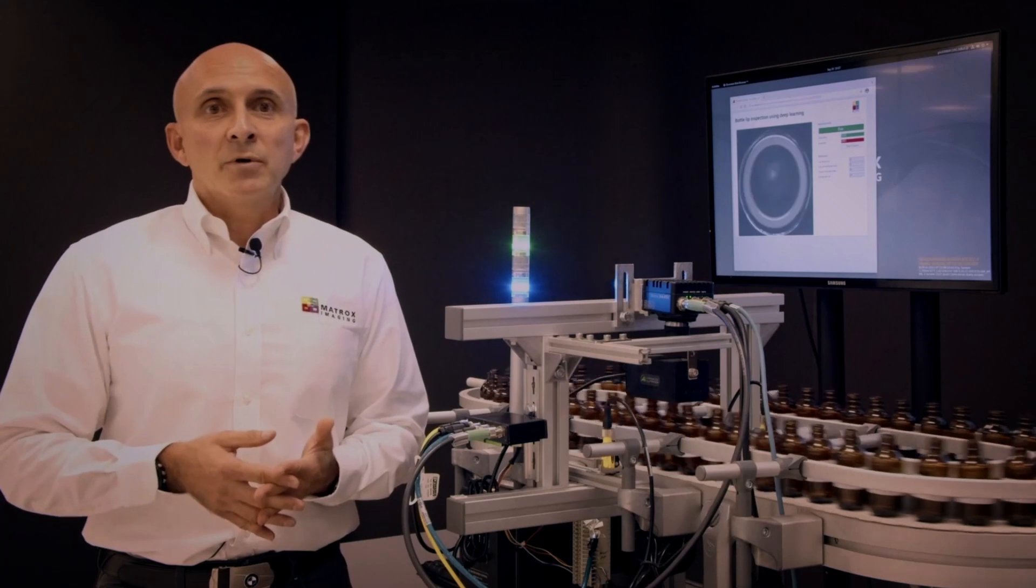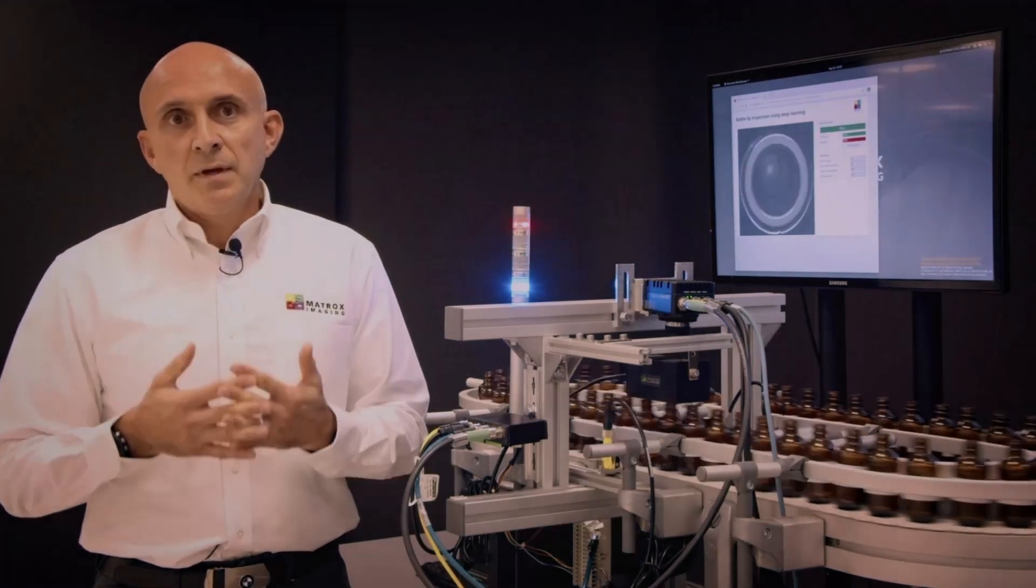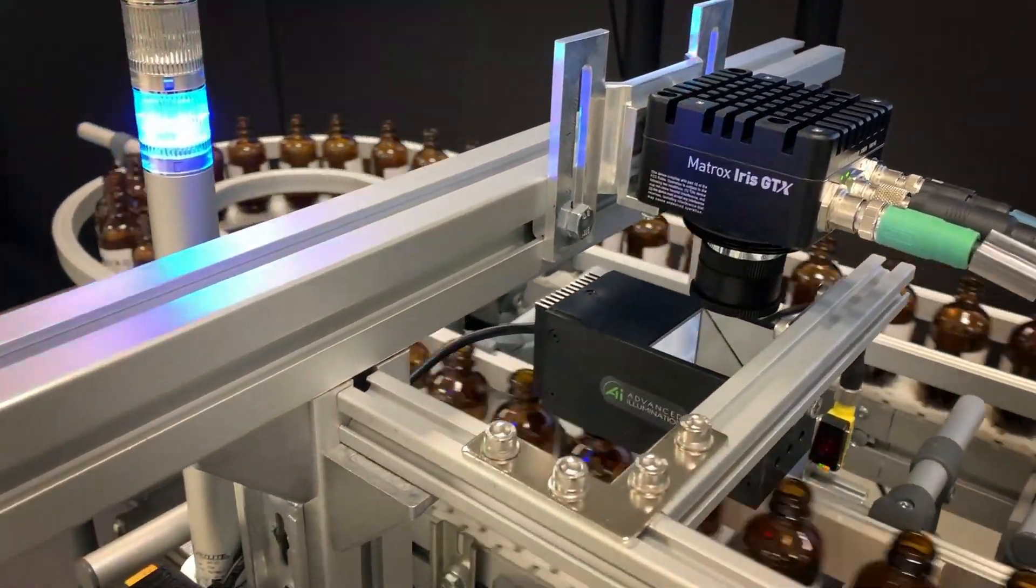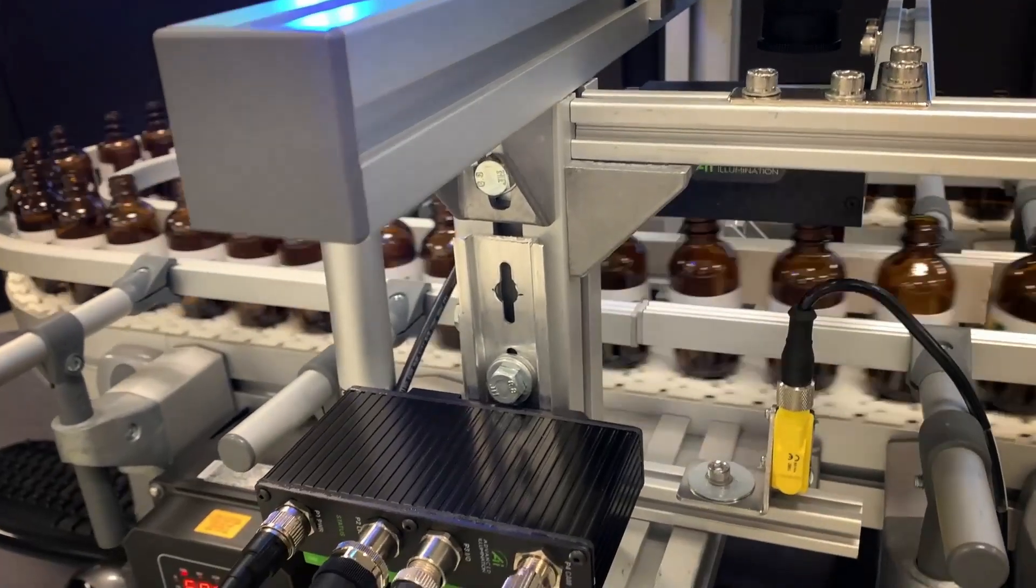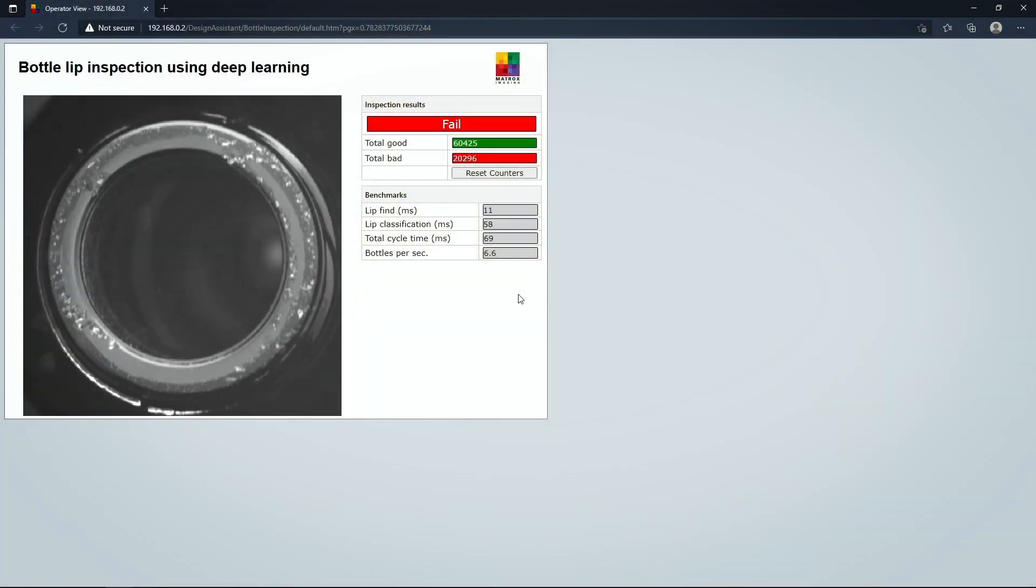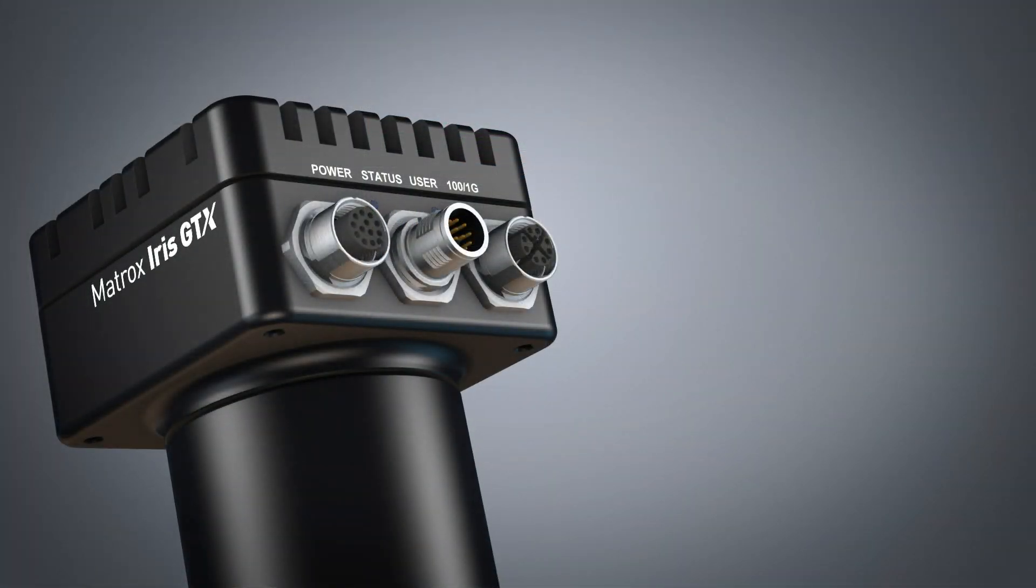The smart camera is triggered from a photo sensor when a bottle appears in view. The smart camera then triggers a coaxial illuminator and acquires an image of the bottle lip. The bottle lip is next located in the image and classified as being okay or no good. Let's have a closer look at the demo.